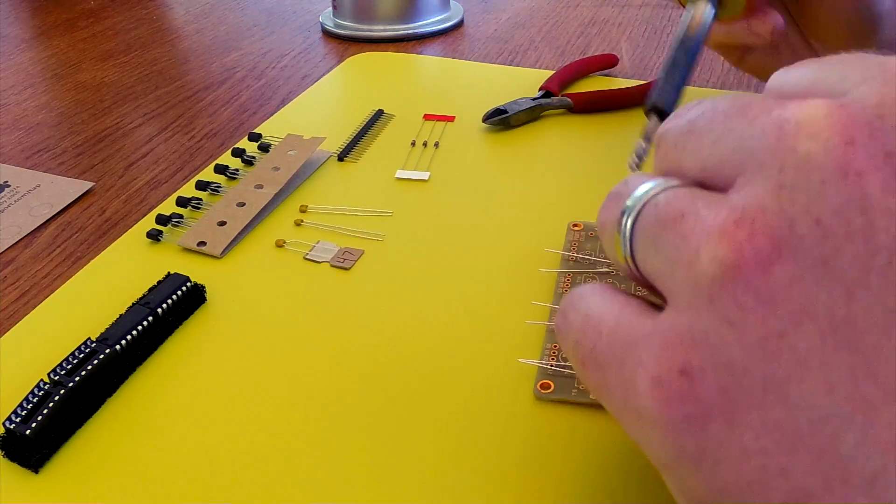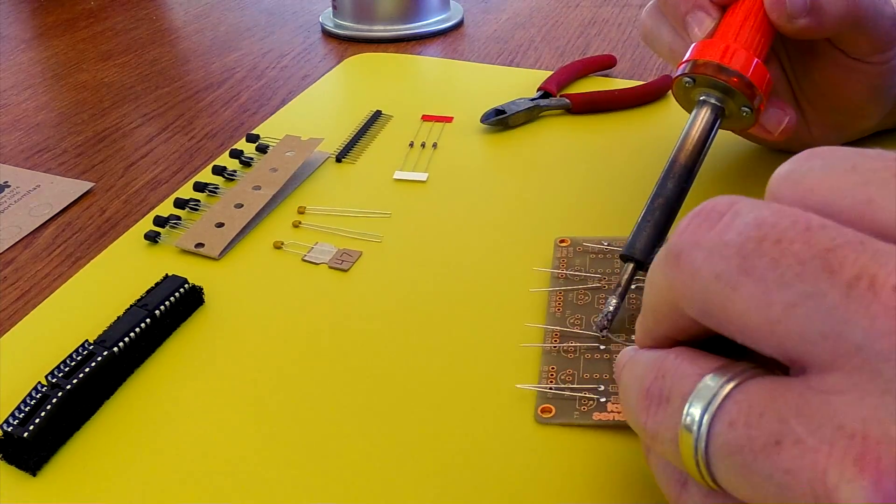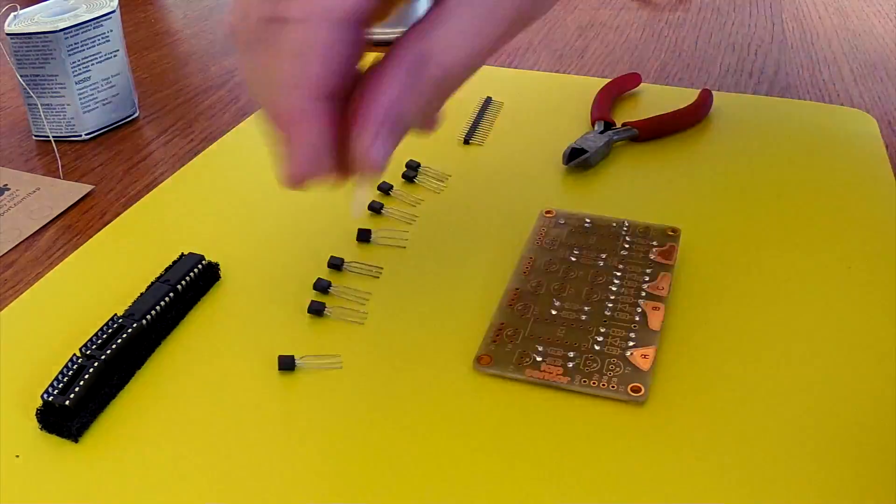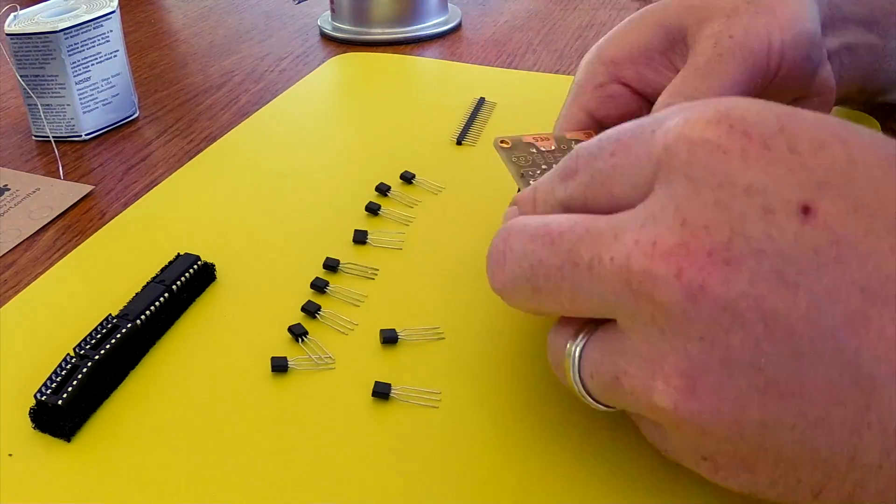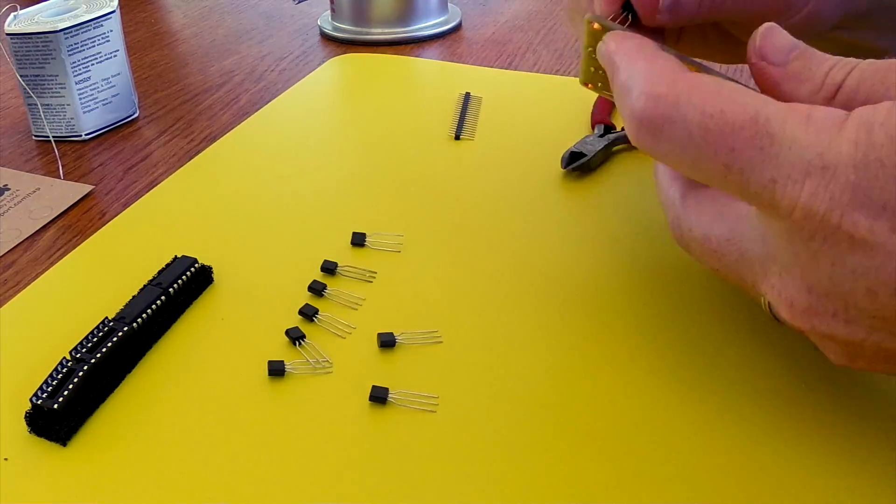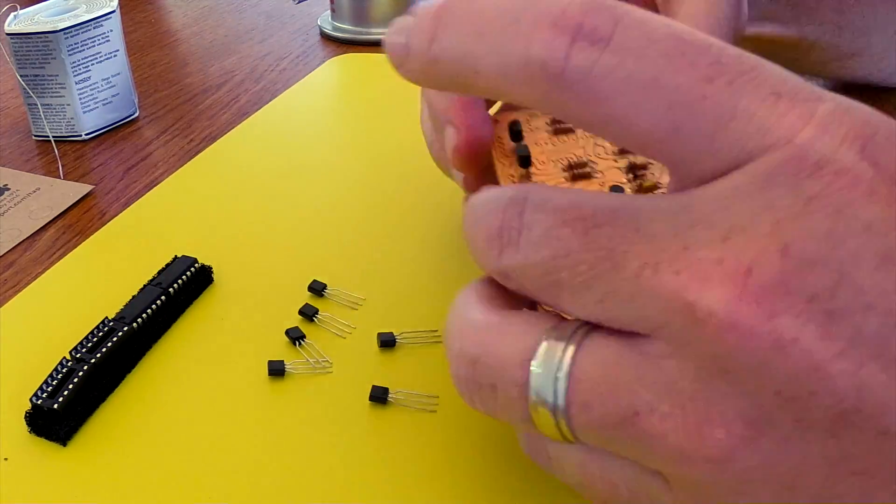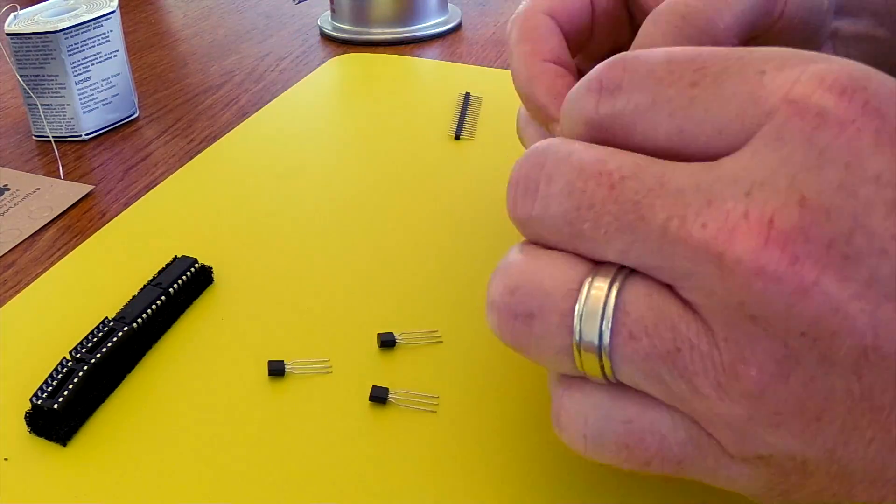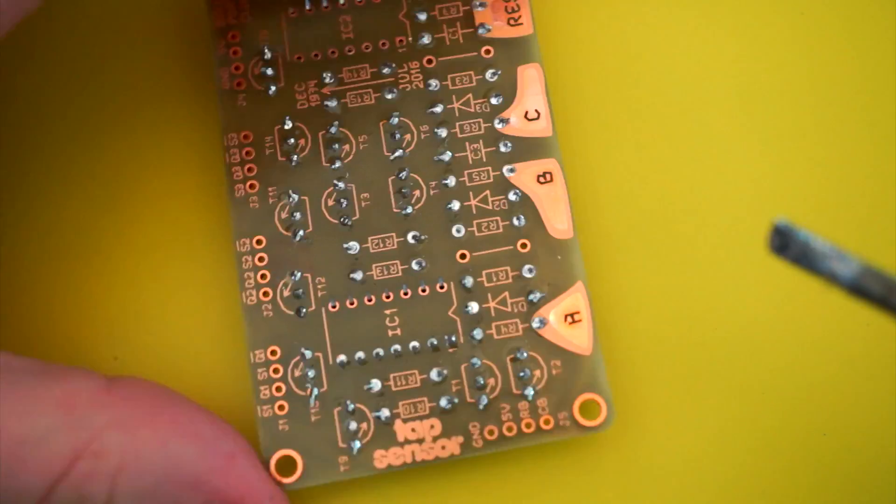Now I wouldn't call it a beginner project, since Boldport assumes that you'll know how to ID your component values and read a schematic in order to place everything where it needs to go. They do print the component outlines on the back though, which comes in real handy when you're trying to figure out whether your transistor is face up or down.